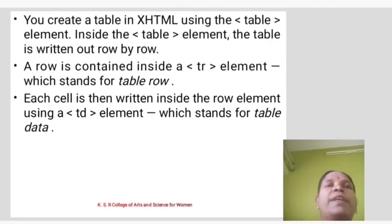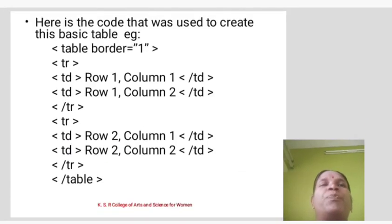You create a table in HTML using the table element. Inside the table element, the table is written out row by row. A row is contained inside a tr element, which stands for table row. Each cell is then written inside the row element using a td element, which stands for table data.